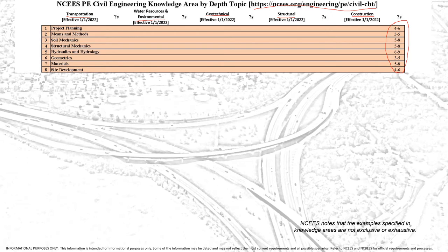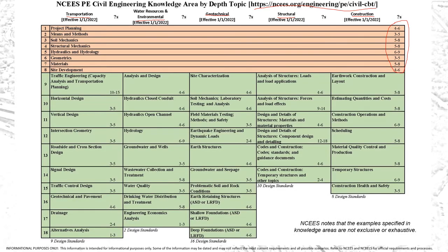When you take the Civil PE exam, you'll choose a depth topic out of one of those five topic areas. The categories in the depth portion have varying numbers of questions. For instance, in transportation, 10 to 15 questions are in traffic engineering, capacity analysis, and transportation planning — a key topic area within transportation.